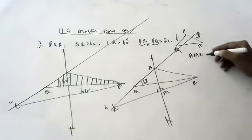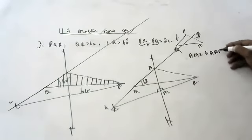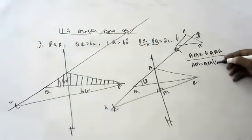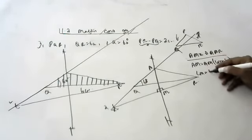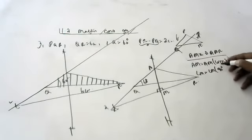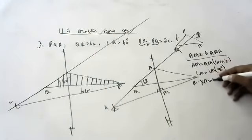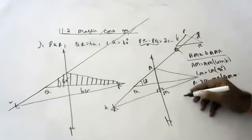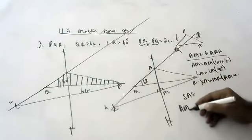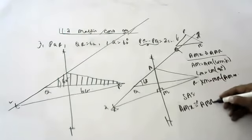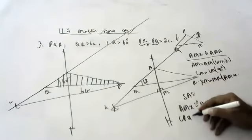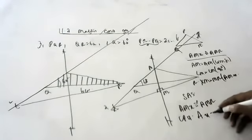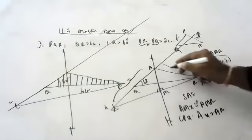In triangles AMX and AMR: AM is equal to AM — common side. Angle M is equal to angle M — 90 degrees. XM is equal to MR — because AM is a perpendicular bisector. By SAS congruency, triangle AMX is congruent to triangle AMR. By CPCT, AX is equal to AR.